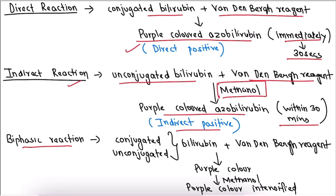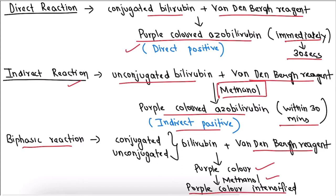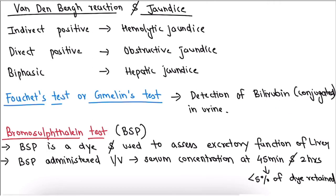The third is the biphasic reaction. When both conjugated and unconjugated bilirubin in serum react with Van den Bergh reagent, a purple color forms, but it is not very intense. By adding methanol, the unconjugated bilirubin dissolves and the purple color becomes intensified. So the three reactions are: direct reaction, indirect reaction, and biphasic reaction.